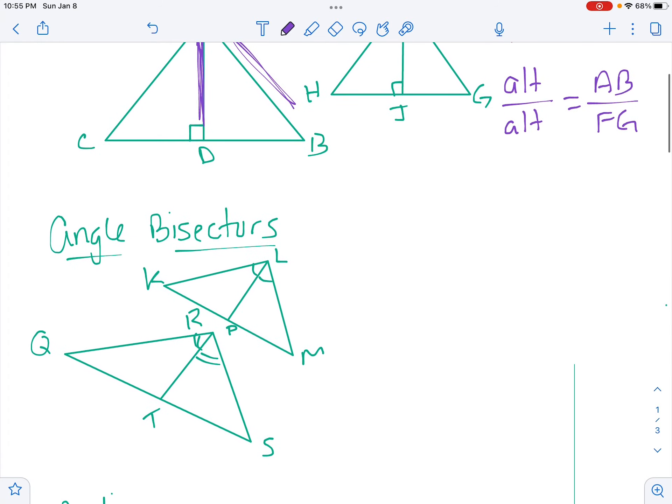Now we also have angle bisectors. Exact same thing. If we know these two triangles are similar, we can do LP over RT equals KL over QR. What did we really do? We really did angle bisector over angle bisector, so that's this guy over this guy equals a side over a side. Doesn't matter which sides as long as they are the ones that line up with our similarity statement.